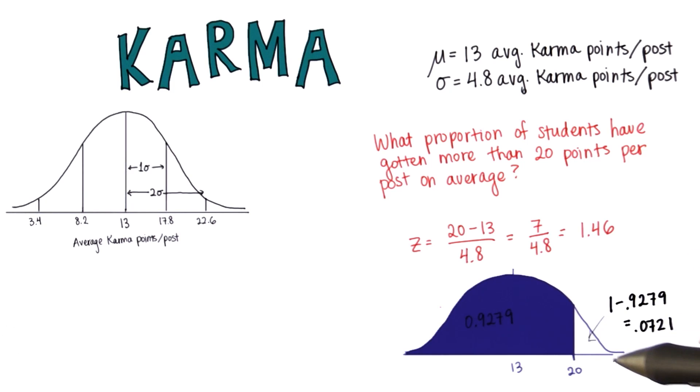So about 7.21% of students have gotten more than 20 points per post on average. If you've gotten more than 20 points per post on average, then you're in the 93rd percentile of students. Congratulations!